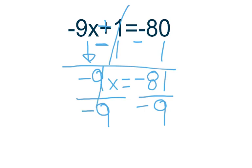These two cross each other out. Once both 9's are cancelled out, you have to divide negative 81 by negative 9 which will leave you with x equals positive 9.